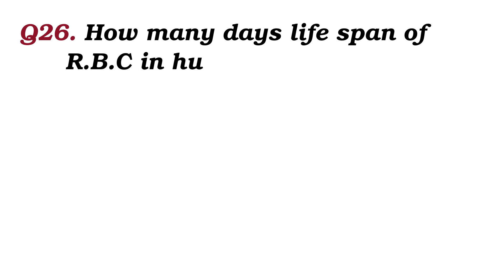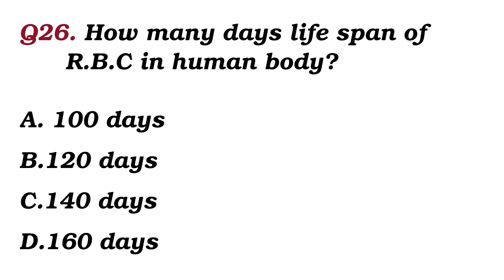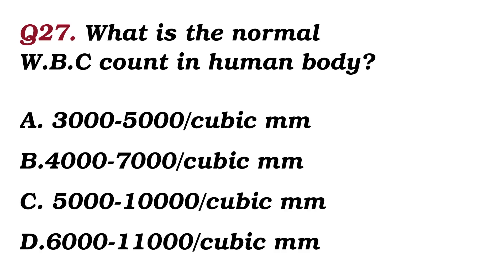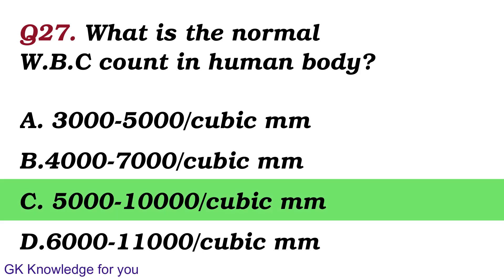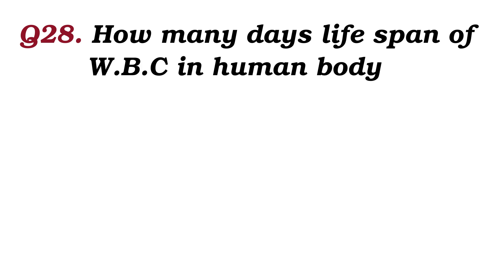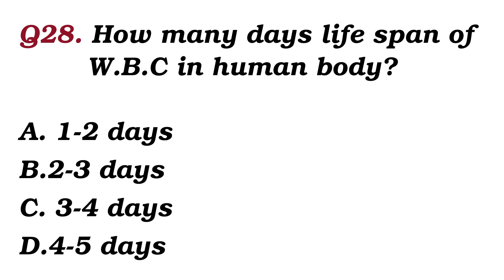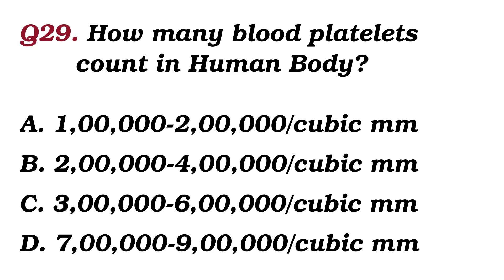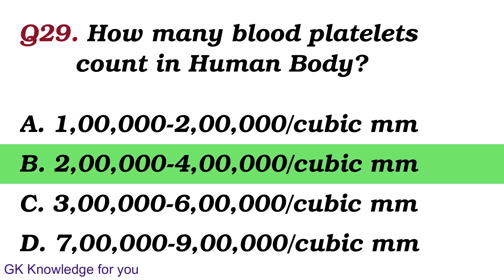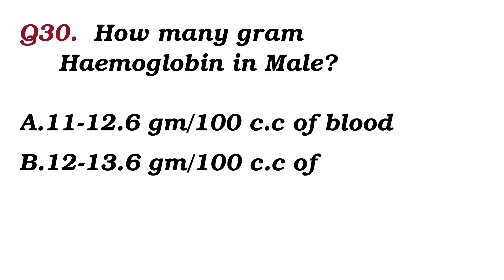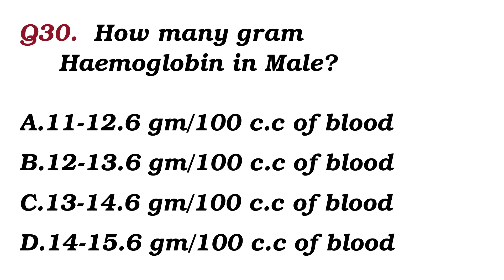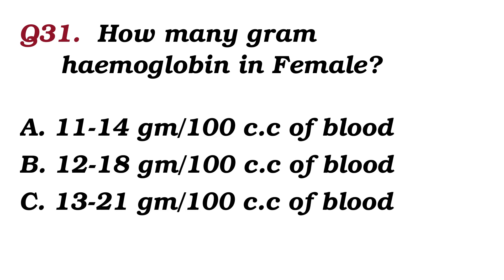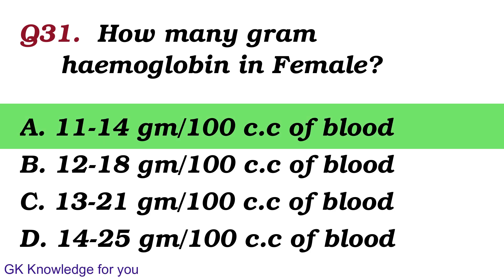How many days is the lifespan of a red blood cell in the human body? The answer is 120 days. What is the normal white blood cell count in the human body? The answer is 5,000 to 10,000 per cubic mm. How many grams of hemoglobin in a male? The answer is 14 to 15.6 grams. How many grams of hemoglobin in a female? The answer is 11 to 14 grams.